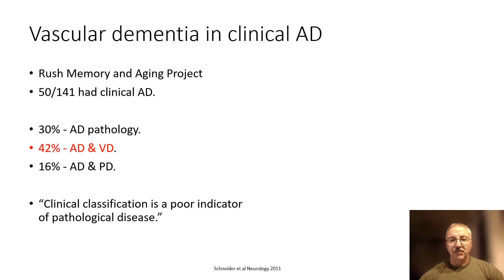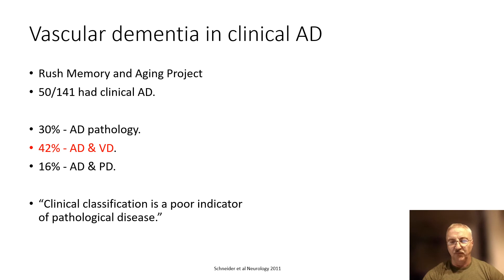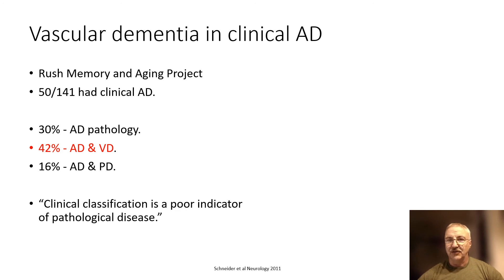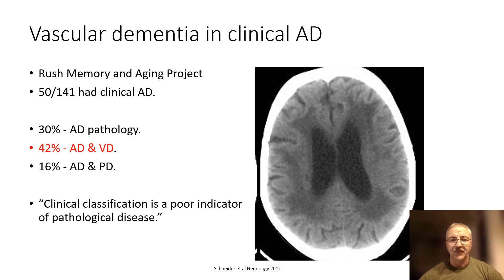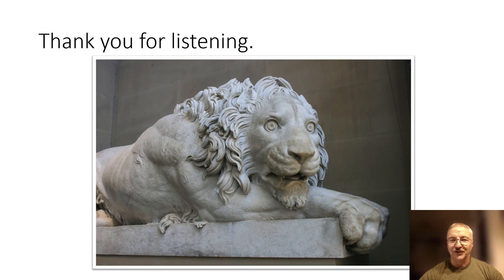Before we finish this part, I want to return to the Rush Memory Project, which looked at 141 clinically defined Alzheimer's disease patients and showed that the commonest pathology was mixed pathology — Alzheimer's and vascular disease. This is replicated in European brain banks and elsewhere, and again they suggested that clinical classification is a poor indicator of pathological disease. Since we are imaging pathological disease, this can create tension between referral characteristics, clinical assessment, and what you're imaging. We can start to see low attenuation deep white matter changes and begin to diagnose true mixed dementia. Thank you for listening, and we'll go on to the next talk.